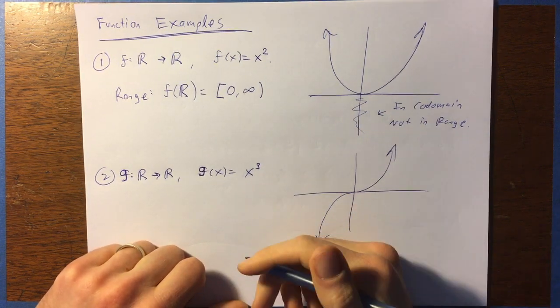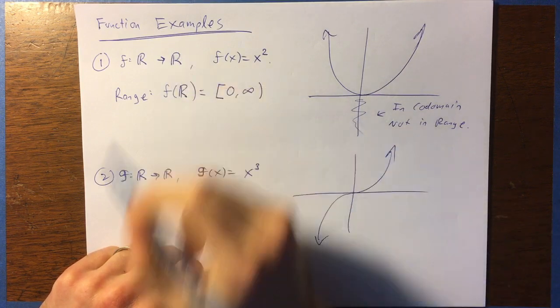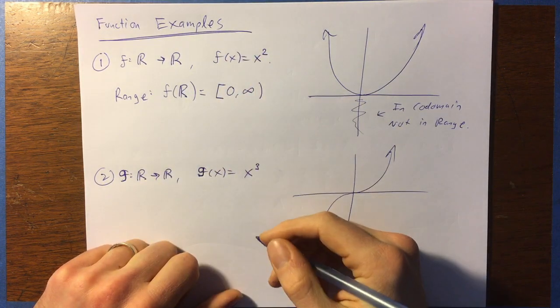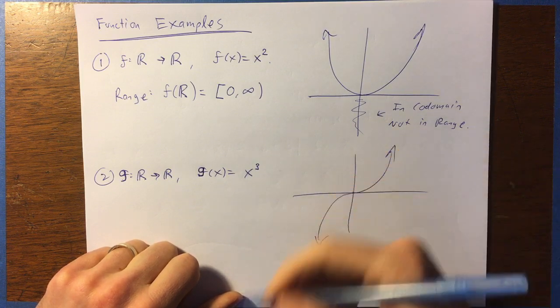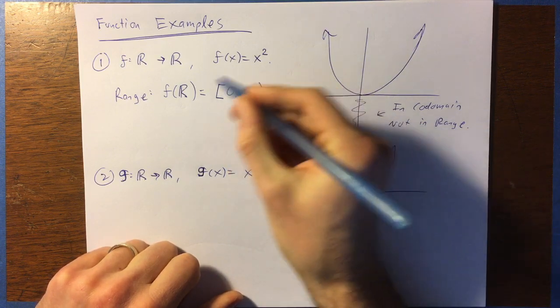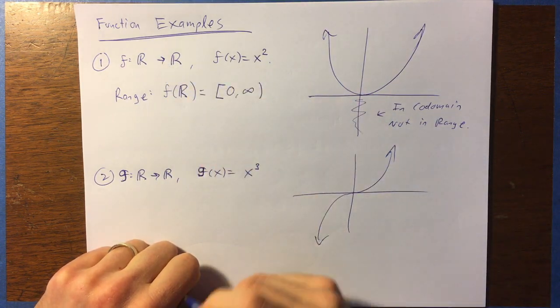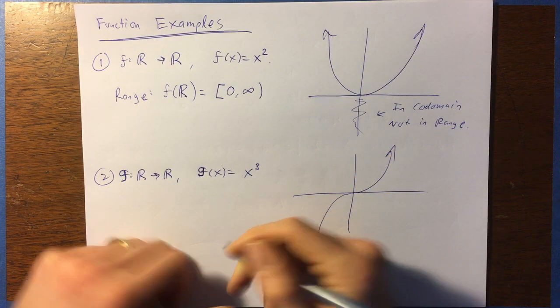Well, I mean, why not? You could, I mean, you could say, let's have the real numbers be the codomain, but we're not actually going to use all of them as outputs. Alternatively, we could have redefined this function just using this range as the codomain. We could have done that. That's called a restriction.